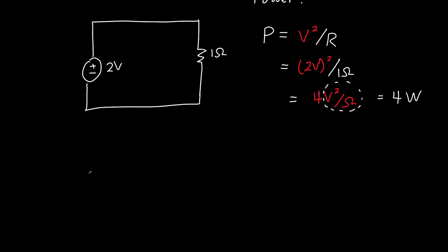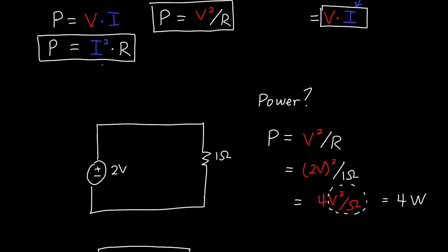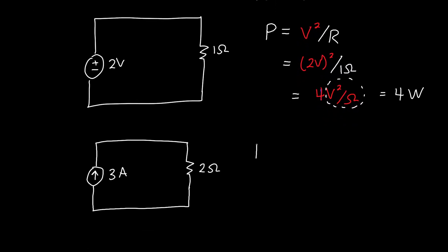Now maybe you don't have the resistance, but you have a current. So let's say we've got three amps of current flowing through a two Ohm resistor. Then we can use our equation in terms of the current instead of the voltage, or the power is equal to the current squared times the resistance. And so our current is three amps, so three amps squared times our resistance is two ohms.